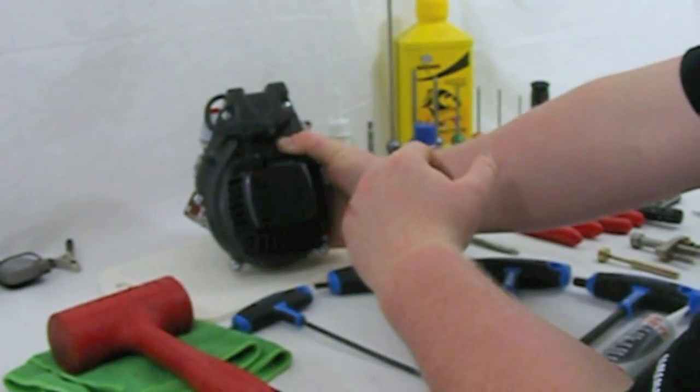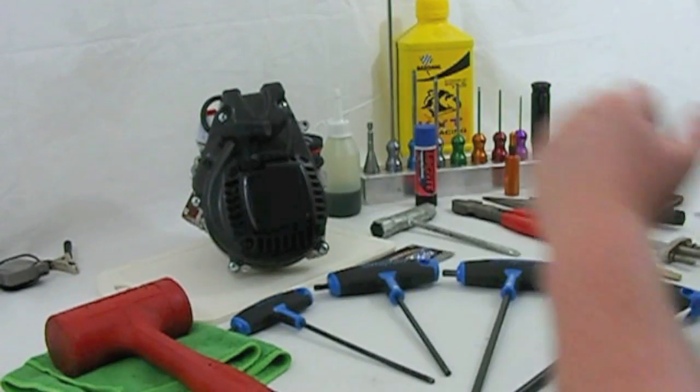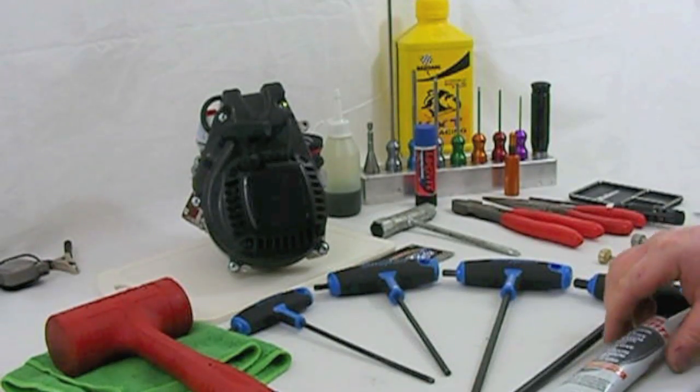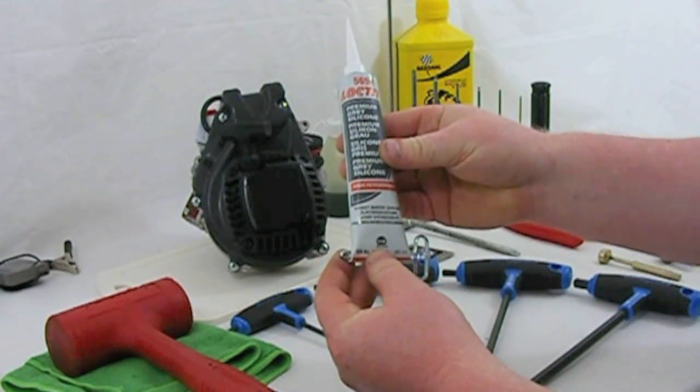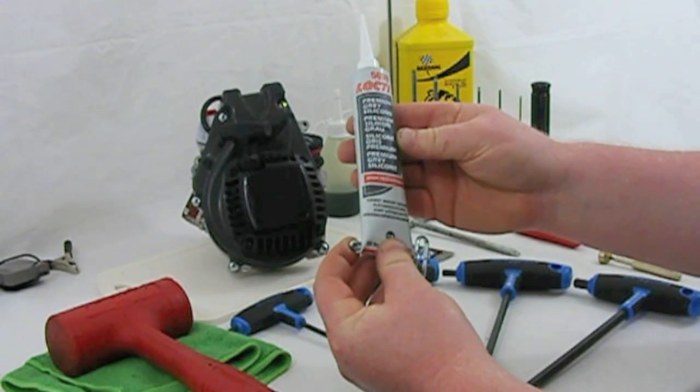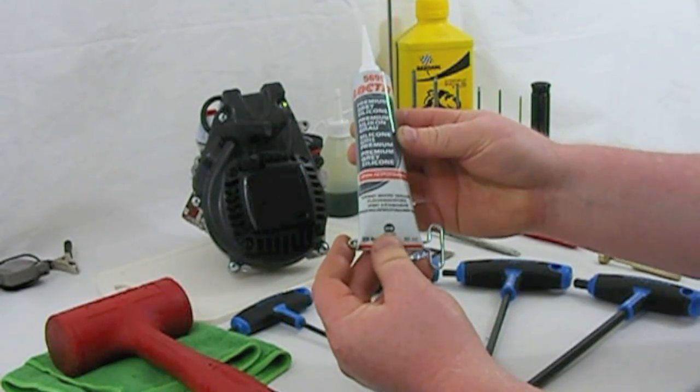To complete this task properly you are going to need some consumables and some tools. So to start off let's run through the consumables you are going to need. You are going to need some Loctite 5699 Premium Grey Silicone Sealant. This will be used for the crankcase gaskets and for the cylinder.